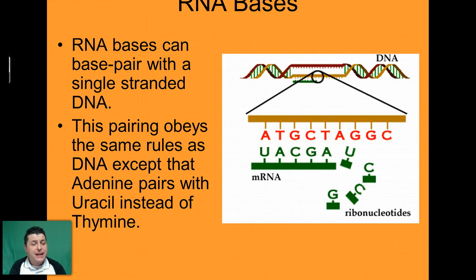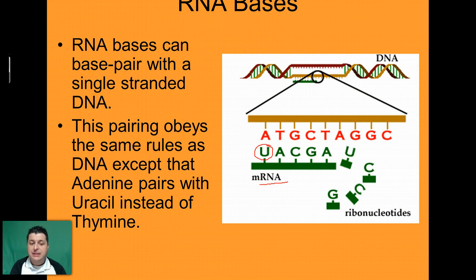When RNA and DNA pair up — because in order for RNA to work in conjunction with DNA they do have to match up at times — they match up just the same, with that one exception. When you have RNA, there's going to be a uracil in place of thymine. So in DNA, if we have an A, it'll go with a U. If in DNA you have a T, you still go with an A. And then the G's and C's, there's no change there.